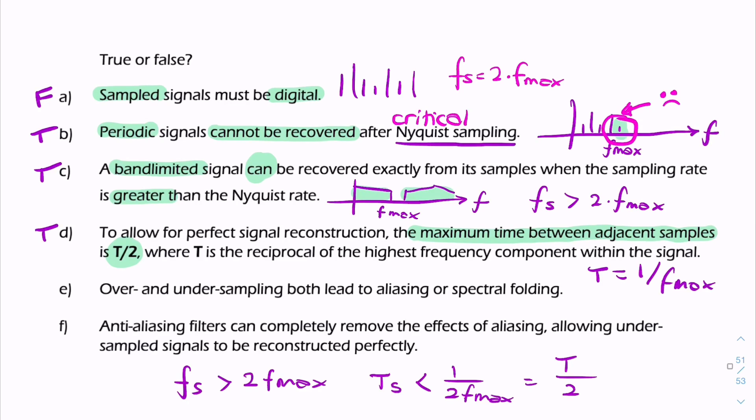Statement e: over and under-sampling both lead to aliasing and spectral folding. Well, aliasing is spectral folding, and that only comes from under-sampling, not over-sampling. So that's false.